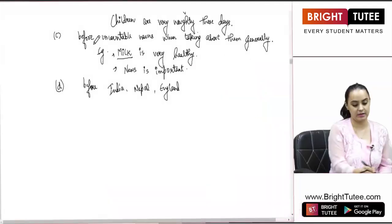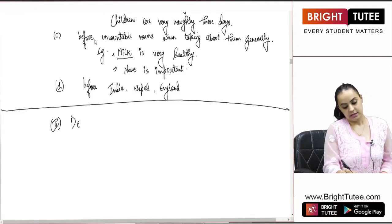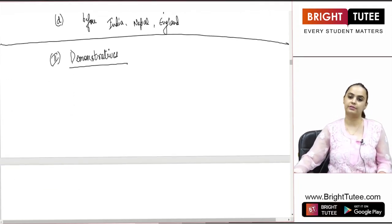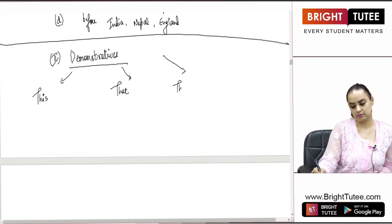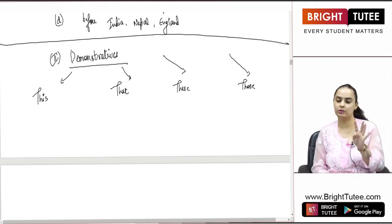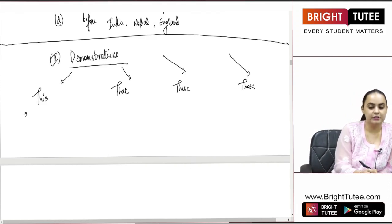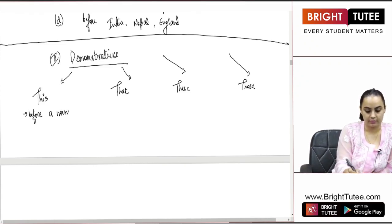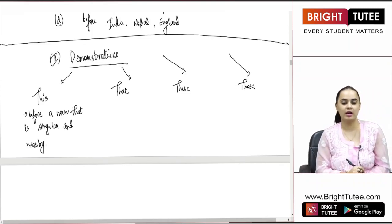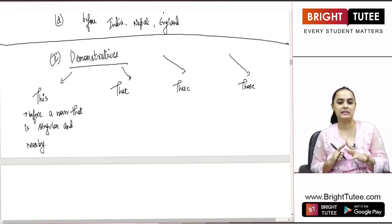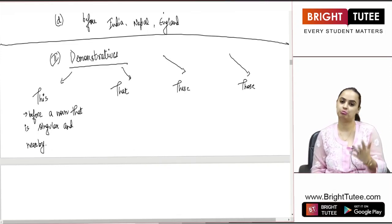The second type of determiner is demonstratives. There are four types of demonstratives: THIS, THAT, THESE, and THOSE. THIS is used before a noun that is singular and nearby — something which is singular in nature and very much near to you, something you can see around yourself and could touch. For example: 'This is a pen' — using the pen I have with me right now.